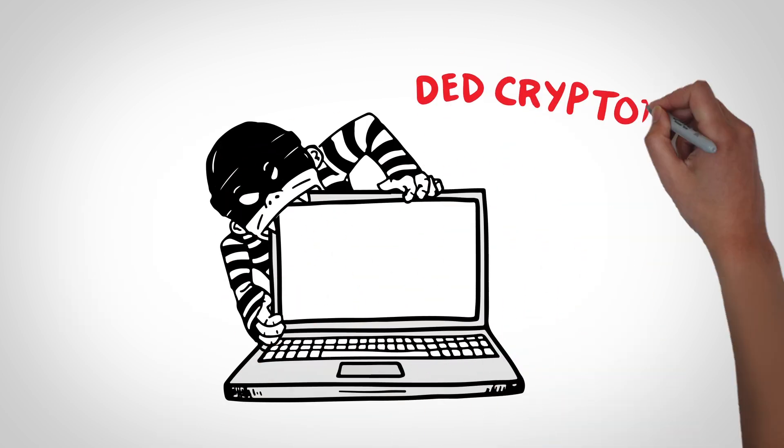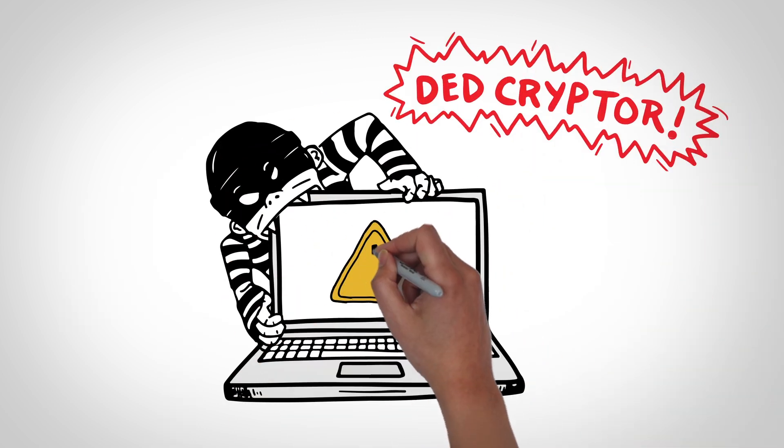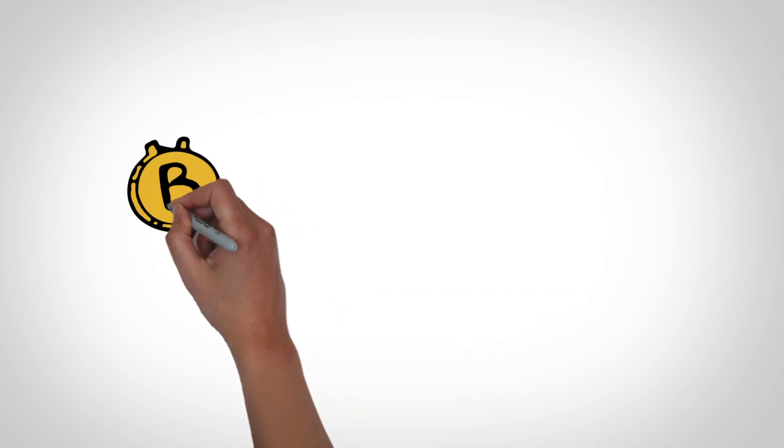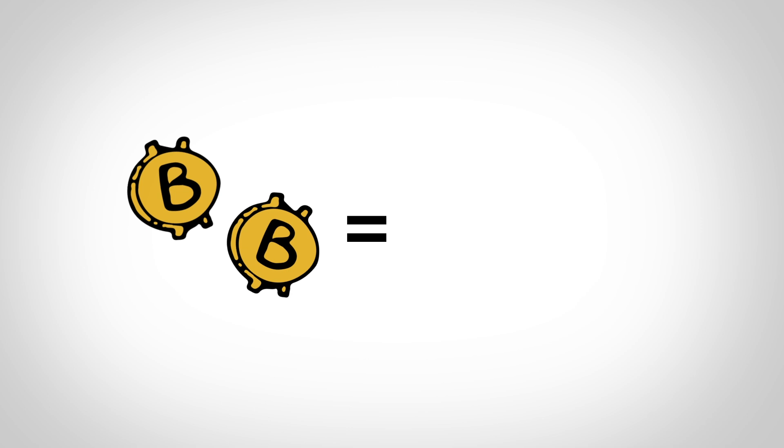One typical example of ransomware is called deadcryptor, which locks your devices and files until you're forced to pay a ransom. The payment that this malware demands is two bitcoins, which is more than $1,000.